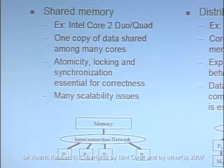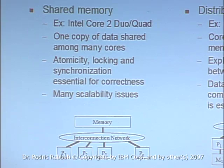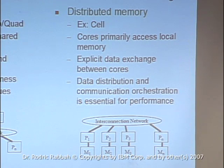You also heard about distributed memory processors. An example of that might be the Cell processor, where cores primarily access their own local memory. While you can have a single global memory address space, to get data from memory you essentially have to communicate with different processors to explicitly fetch data in and out. So things like data distribution, where the data is, and what your communication pattern is like affect your performance.